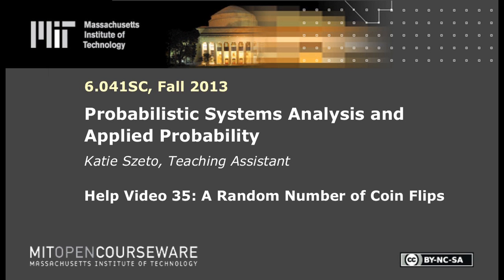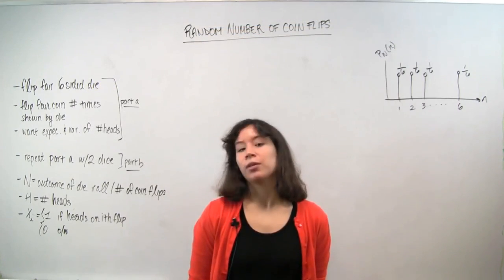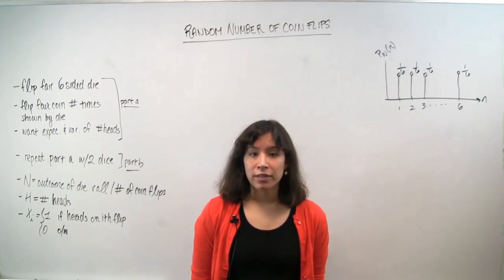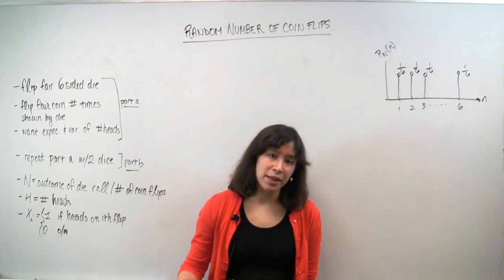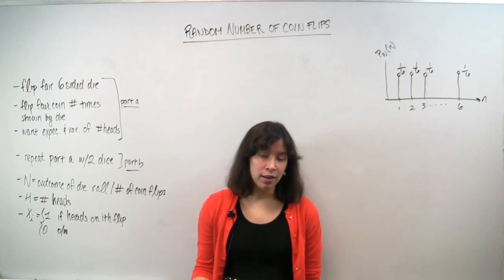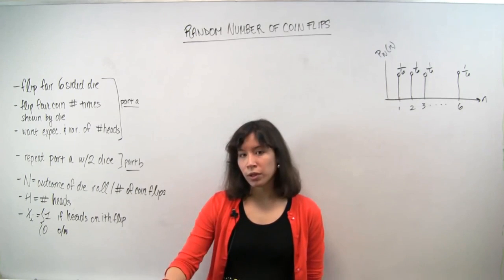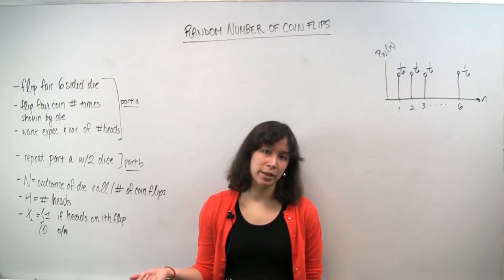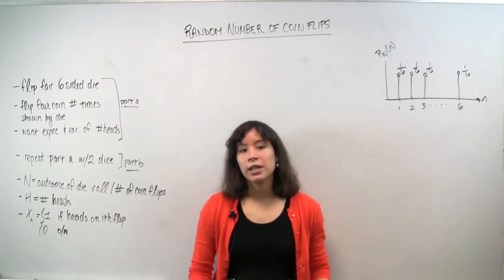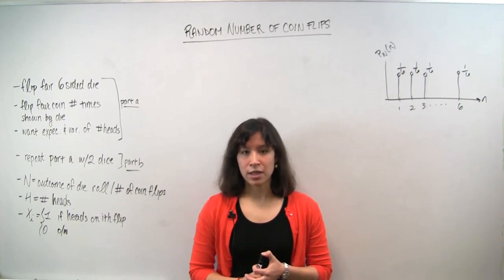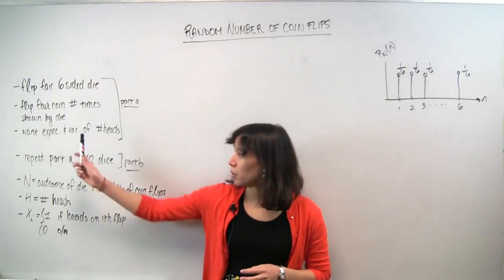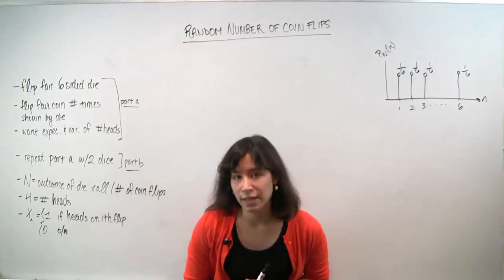Hey everyone, welcome back. Today we're going to do another fun problem that has to do with a random number of coin flips. The experiment we're going to run is as follows: we're given a fair six-sided die and we roll it. Then we take a fair coin and flip it the number of times indicated by the die. If I roll a four, then I flip the coin four times. We're interested in computing the expectation and the variance of the number of heads that show up.